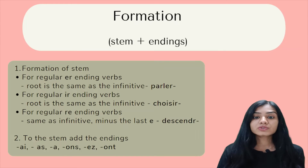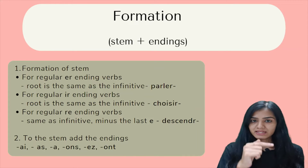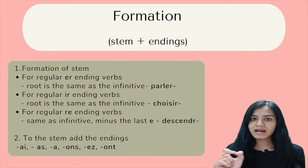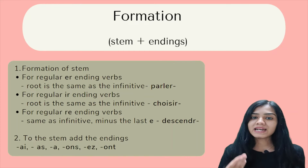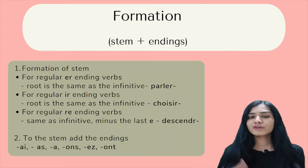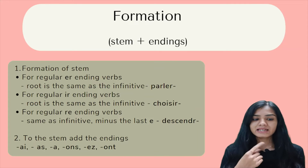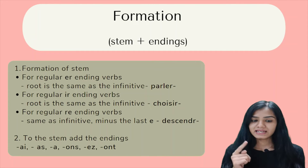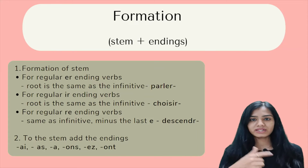Now, talking about the endings. To this stem — like 'parler' — we add the endings of futur simple. The endings are: ai, as, a, ons, ez, and ont.